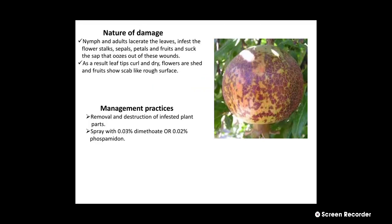The nature of damage: the damaging stage is nymphs and adults. They lacerate or scrape the surface of leaves, also scrape the surface of flower stalks, sepals, petals, and fruits, and suck the oozing cell sap. As a result, leaf tips curl and dry, flowers are shed, and fruits show a scab-like rough surface. In the image we can see the damaging symptoms on fruits. Management: remove and destroy infested plant parts, then spray with 0.03% dimethoate or 0.02% phosphomidon.